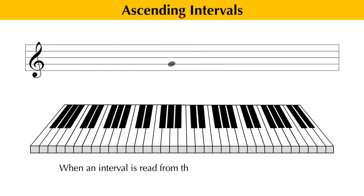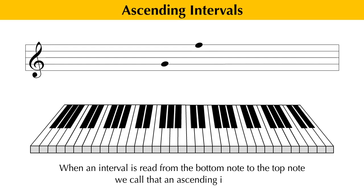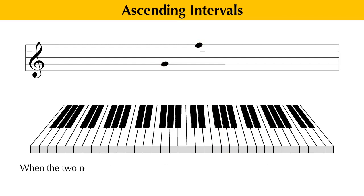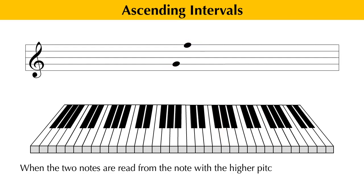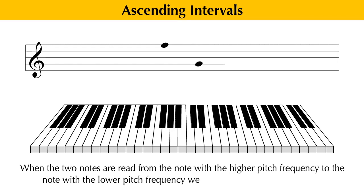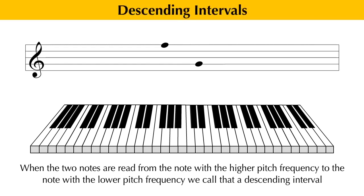When an interval is read from the bottom note to the top note — meaning the note with the lower pitch frequency to the note with the higher pitch frequency — we call that an ascending interval. When the two notes are read from the note with the higher pitch frequency to the note with the lower pitch frequency, we call that a descending interval.